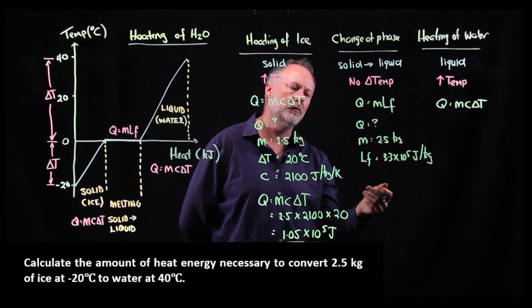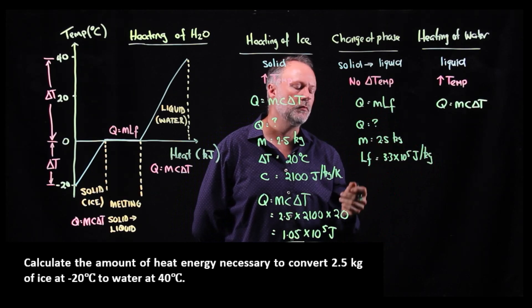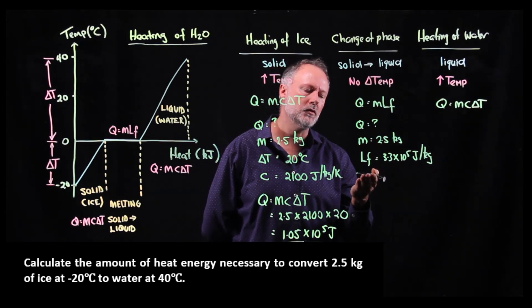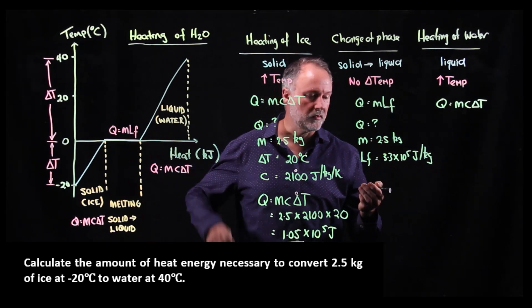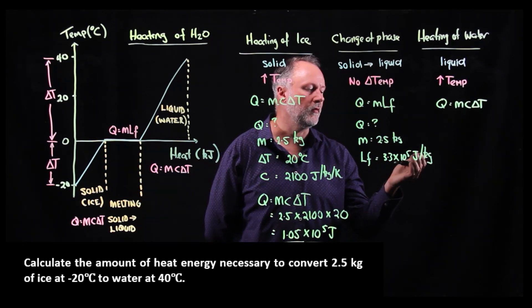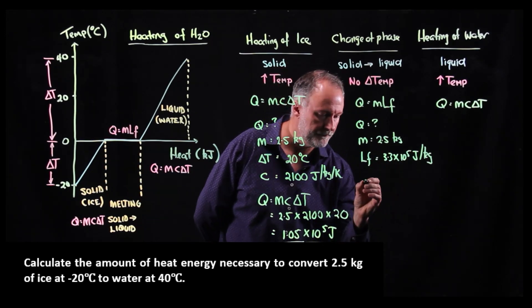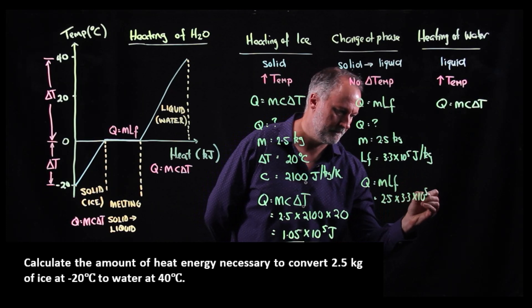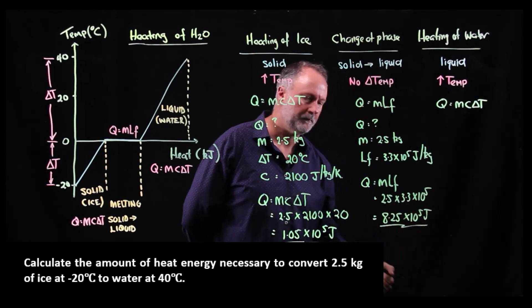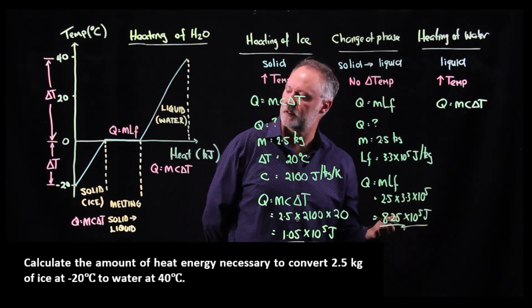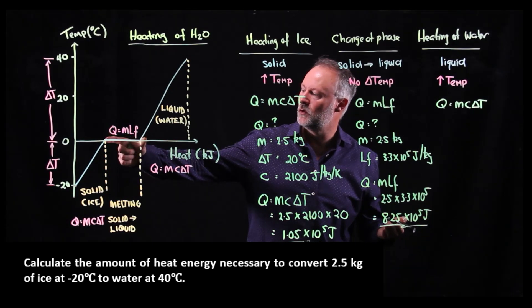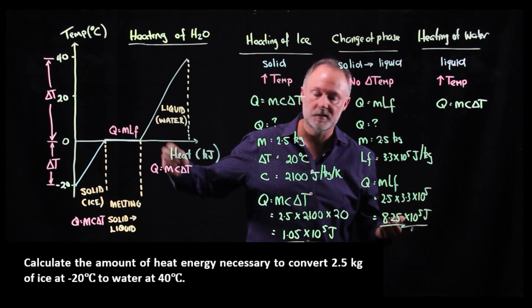So there's the variables, Q equals question mark, the heat energy. M is 2.5 kilograms. And latent heat of fusion, when we're going from ice to water, is 3.3 by 10 to the 5 joules per kilogram. So there's the amount of energy required to completely melt 2.5 kilograms of ice to water.